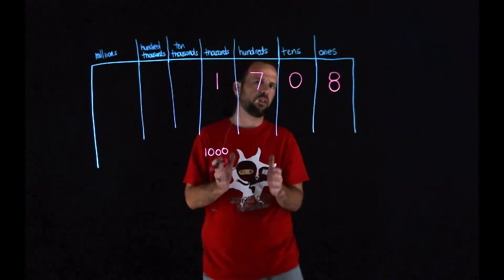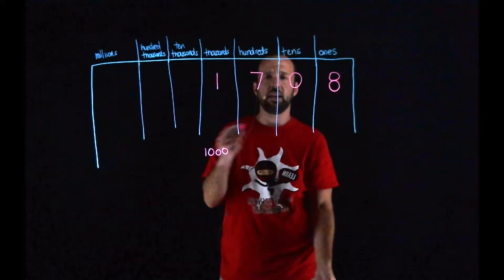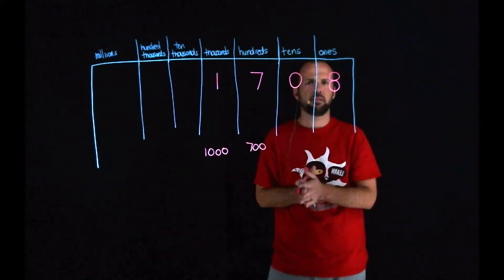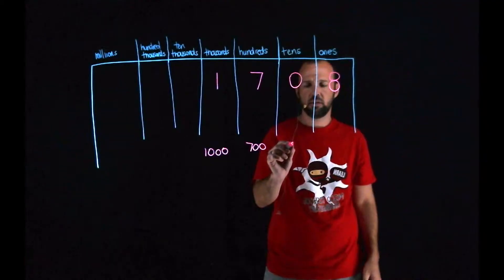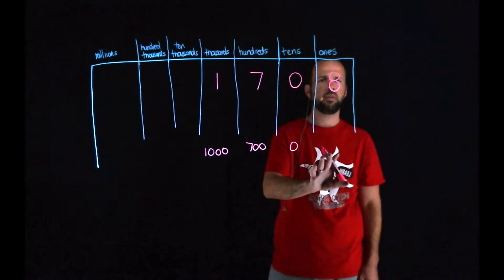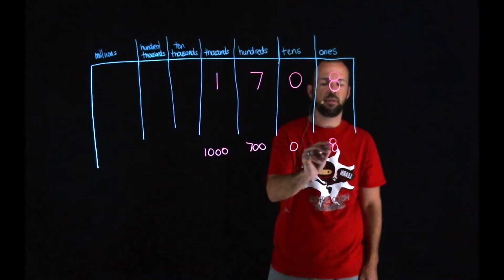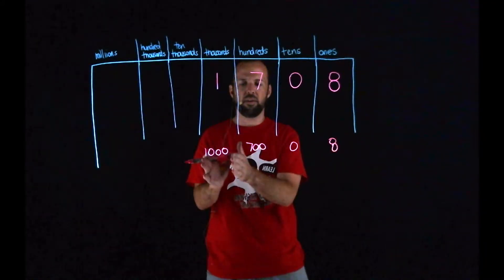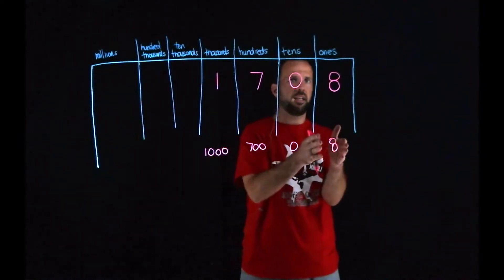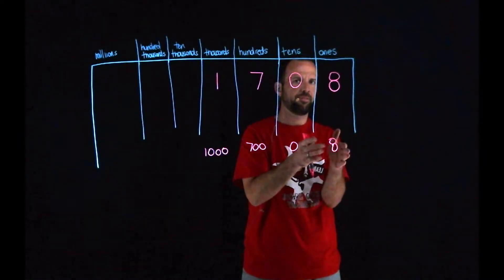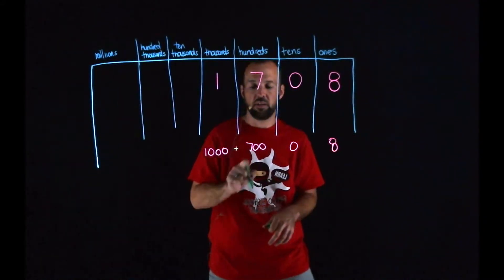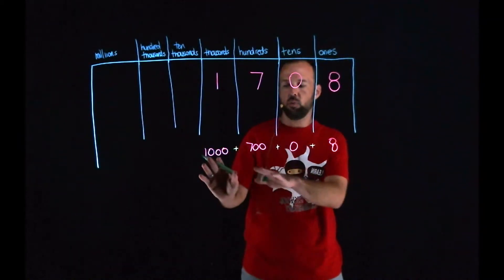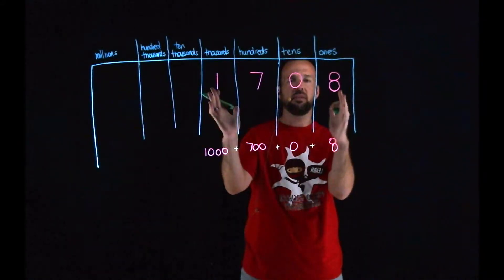What about this 700? The value of that would be 700. What about our 10s? We have a 0 in the 10s place, which means we don't have any 10s — so the value of our 10s is 0. And our 1s are worth 8. So we have 1,000, 700s, no 10s, and 8 ones. So another way that I can think of this number is as 1,000 plus 700 plus 0 plus 8, which gives us 1,708.